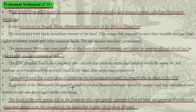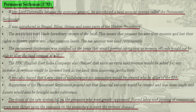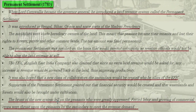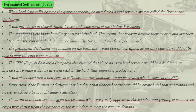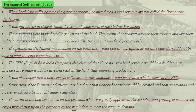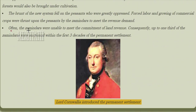Supporters of the Permanent Settlement pointed out that financial security would be created, and that waste lands and forests would be brought under cultivation. However, the brunt of this new system fell on the peasants, who were greatly oppressed. Forced labour and growing of commercial crops were thrust upon the peasants by the Zamindars to meet revenue demands. Often the Zamindars were unable to meet their revenue commitments, and consequently up to one third of the Zamindaris were auctioned.